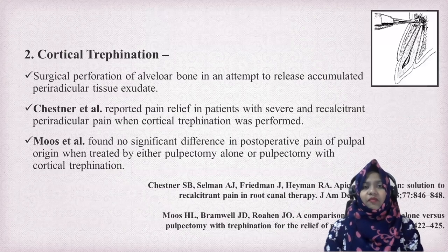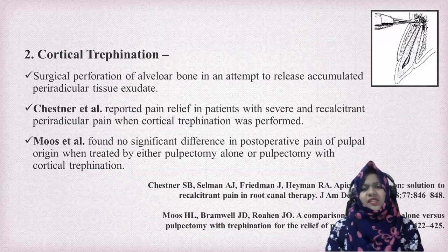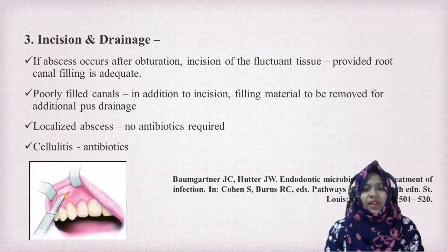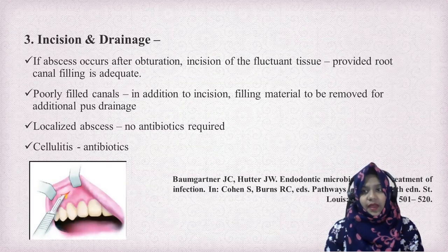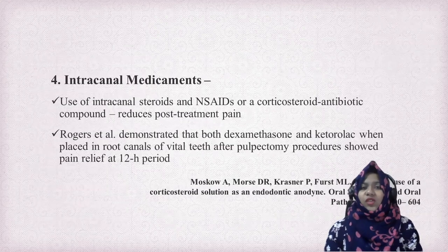The second definitive treatment is cortical trephination — surgical perforation of the alveolar bone to relieve accumulated periradicular tissue exudate within the apex. However, many studies have reported that patients felt no relief in symptoms with cortical trephination. The third is incision and drainage: if abscess occurs after obturation, incision of the fluctuant tissue is done, provided the obturation is adequate. If not, in addition to incision, filling material should be removed for additional pus drainage. The fourth is use of intracanal medicaments, which reduce post-treatment pain.